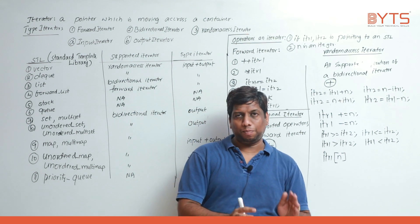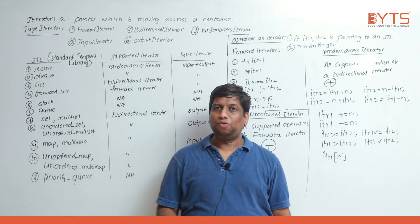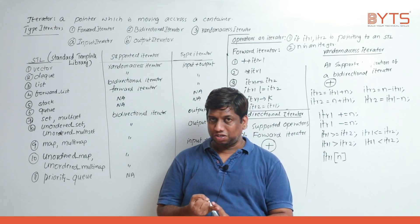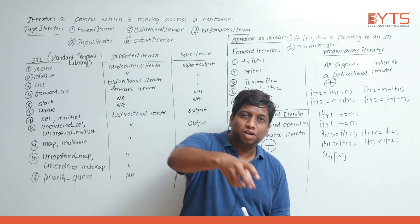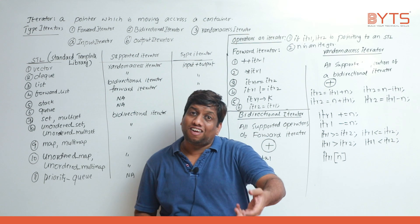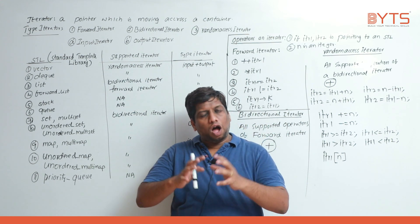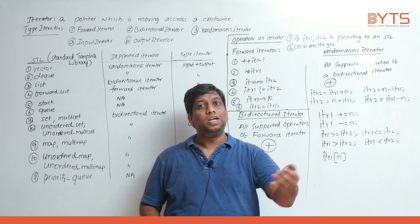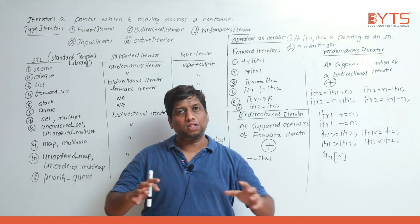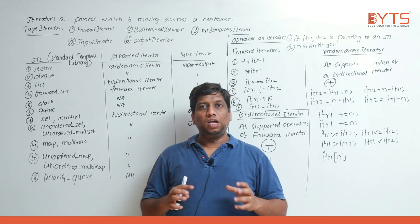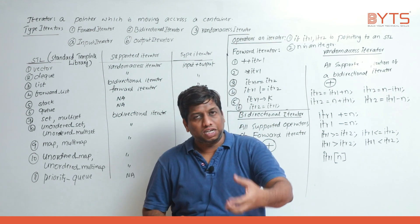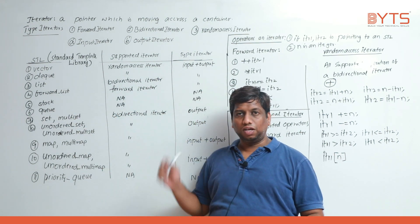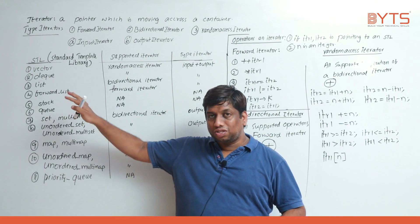Every data structure has an STL predefined for it. When we use a data structure, the common operations are: traversing/reading, insertion, deletion, and searching. Based on the programmer's need — if the intention is searching, we go for one STL; if the intention is insertion and deletion, we go for another. So based on need we must choose the STL wisely.